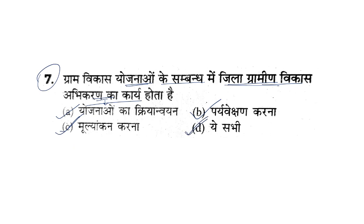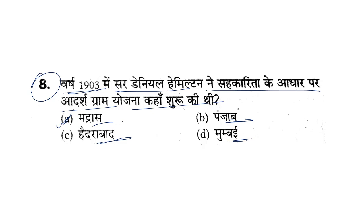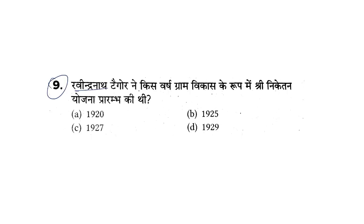Q8: In 1903 in Madras, Sir Daniel Hamilton started the Adarsh Gram Yojana in a village called Sundaram near Madras, based on the principle of cooperatives. In this scheme, unemployed rural youth were given training. Then, as a form of Gram Vikas, the Sri Niketan Yojana program was launched — either in 1925, 1927, or 1929.